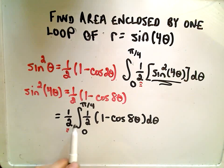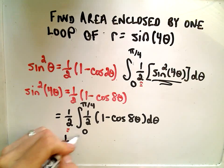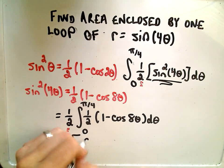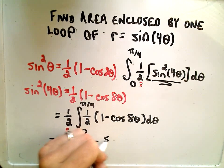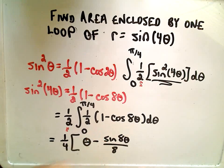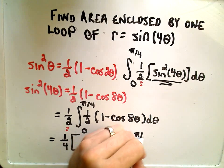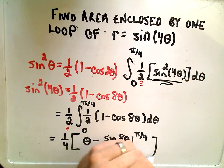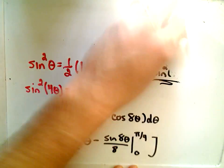Now it's just tedious integration. I'm going to multiply the two one-halves and get a fourth. If I integrate one, I'm going to get theta. The antiderivative of cosine eight theta is going to be sine of eight theta over eight. You can justify that using a u substitution. We have to evaluate this from zero to pi over four. So let's go ahead and do that.